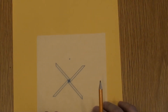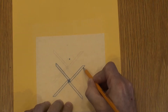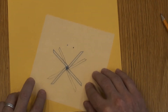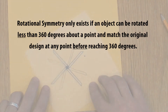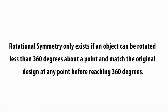Transparent paper is an advantageous tool to use when determining rotational symmetries because I can both trace and see through the paper at the same time. Rotational symmetry only exists if an object can be rotated less than 360 degrees about a point and match the original design at any point before reaching 360 degrees.